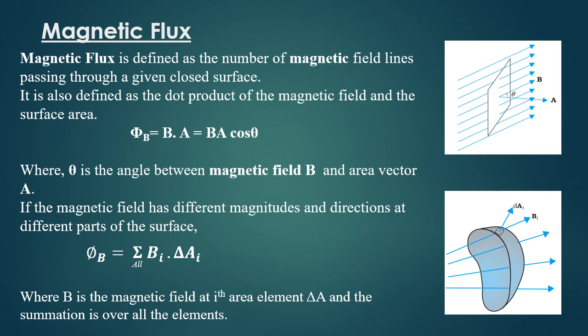Let us consider a non-uniform magnetic field as shown in the figure. Non-uniform magnetic field means the magnetic field is having different magnitude and directions at different parts of the surface.